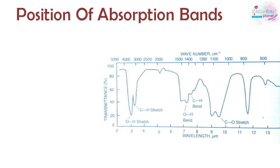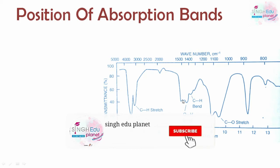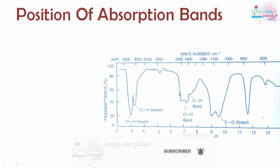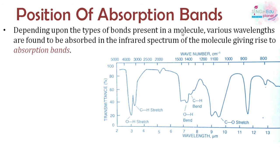First, the position of absorption bands. The graph recorded in the IR spectrophotometer is called the IR spectrum. Many bands in this graph are called absorption bands. Depending on the types of bonds, different wavelengths are absorbed by the molecule, giving different absorption bands. This graph plots wavelength and wavenumber against transmittance, allowing us to study many different things.